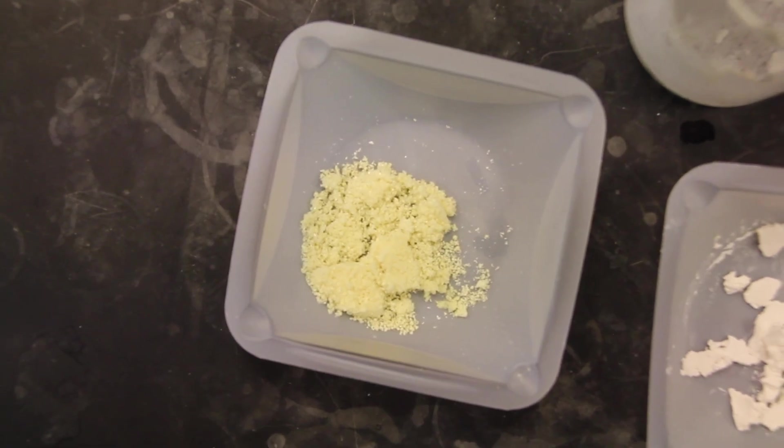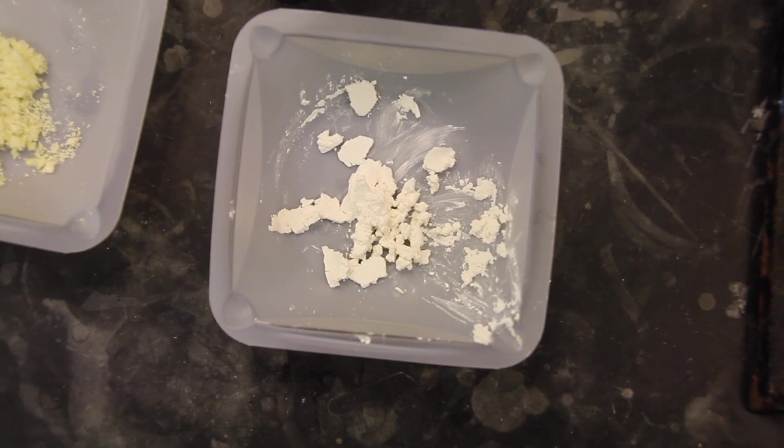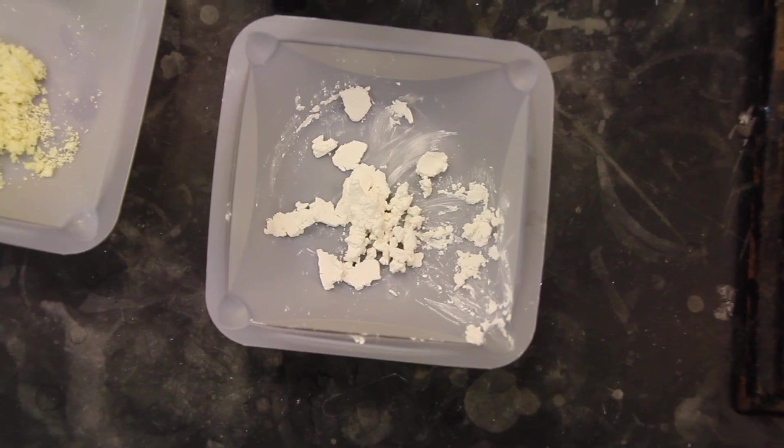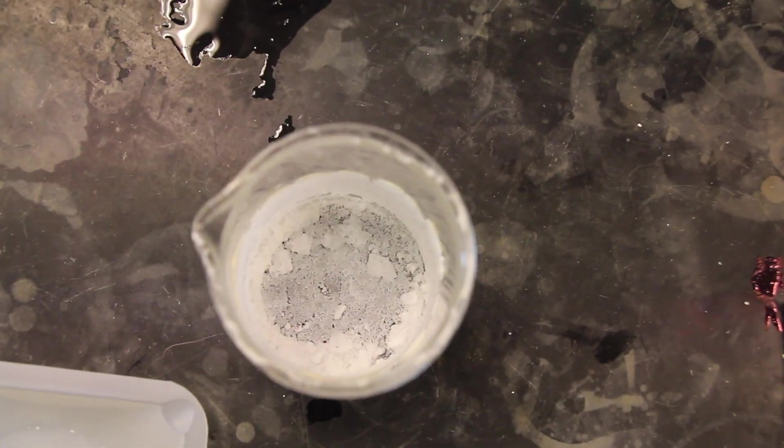Finally, you will need to identify the two compounds based on their acid-base properties and their melting points. If the melting point does not provide an unequivocal identification of a compound, a mixed melting point may be useful. Known samples of all six possible compounds are available in the lab.